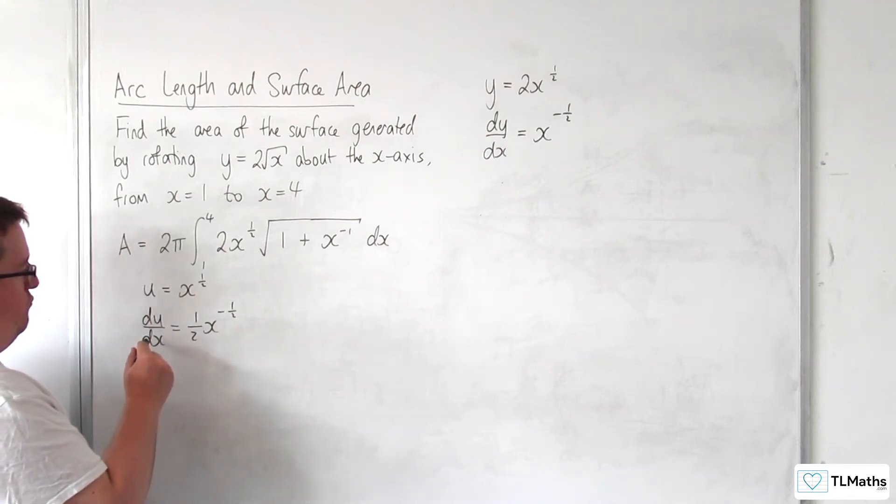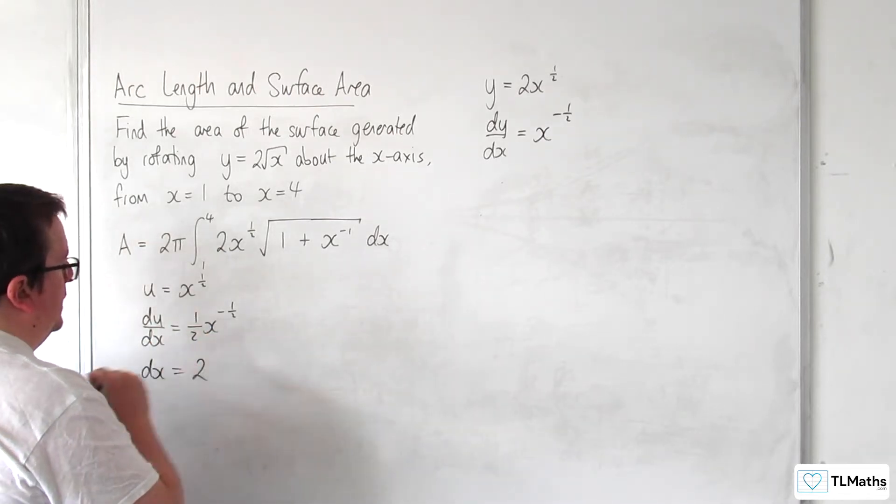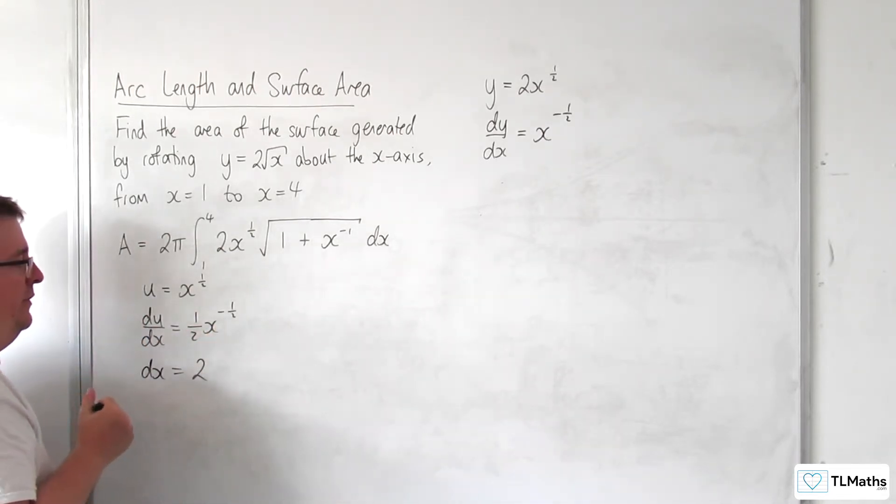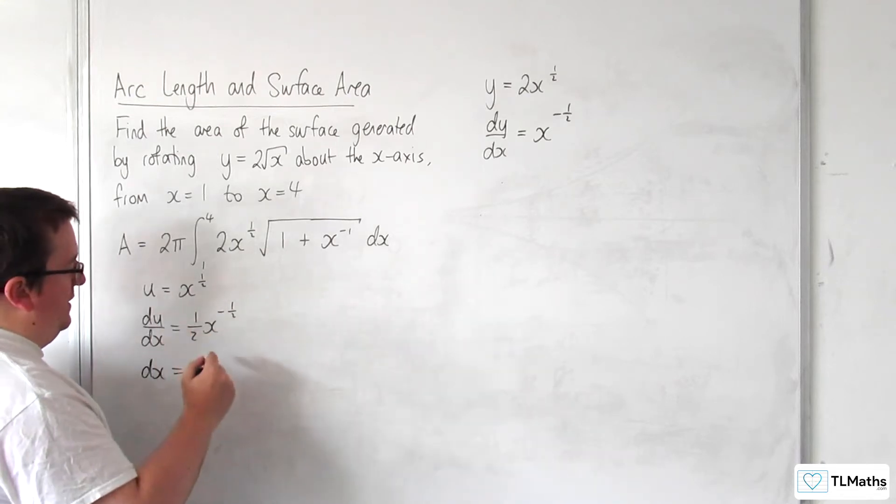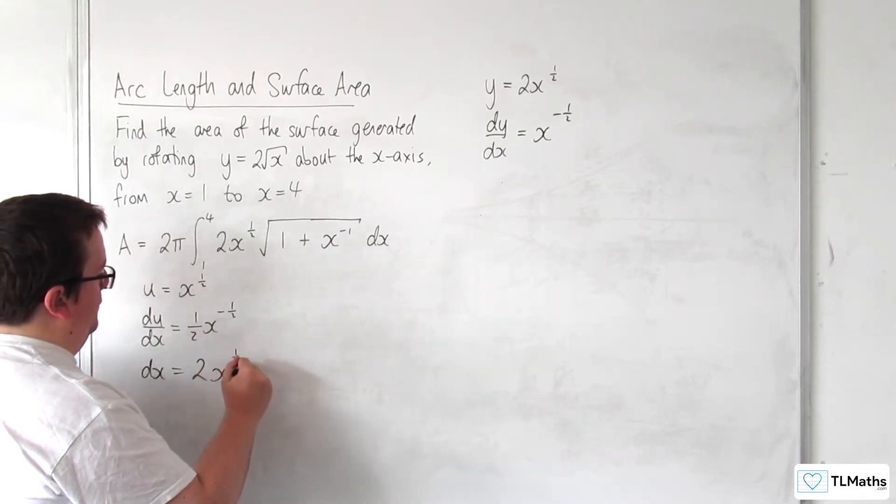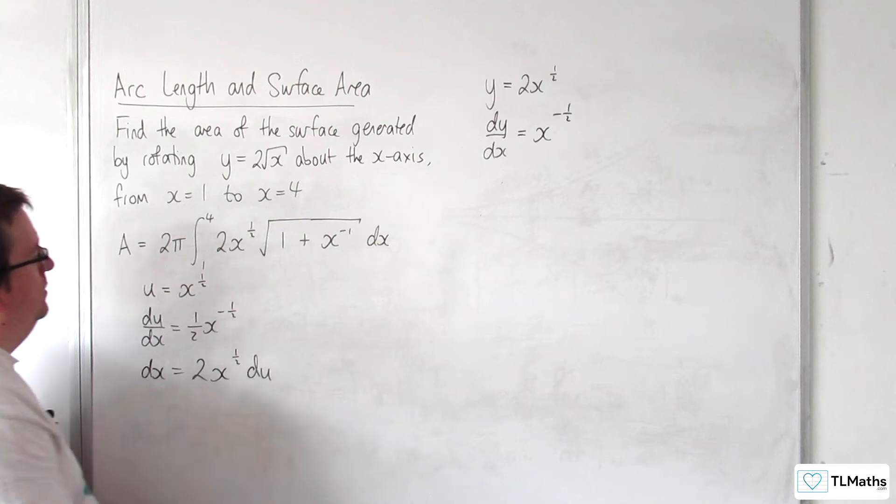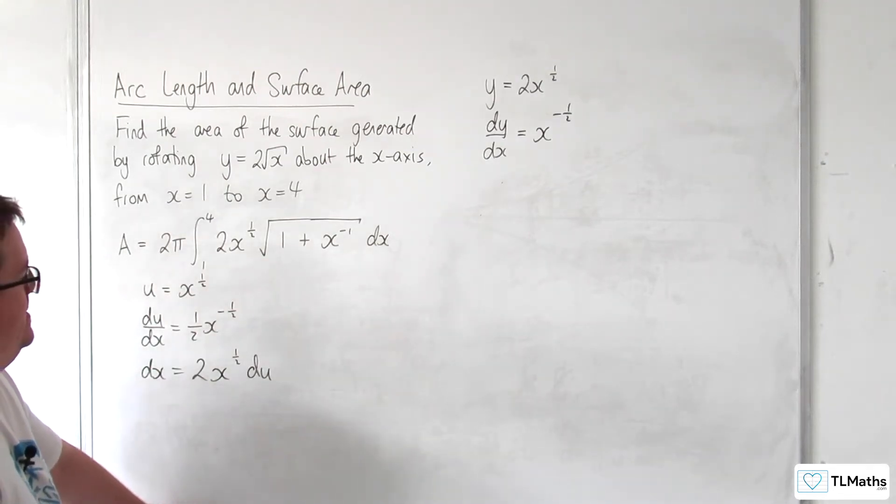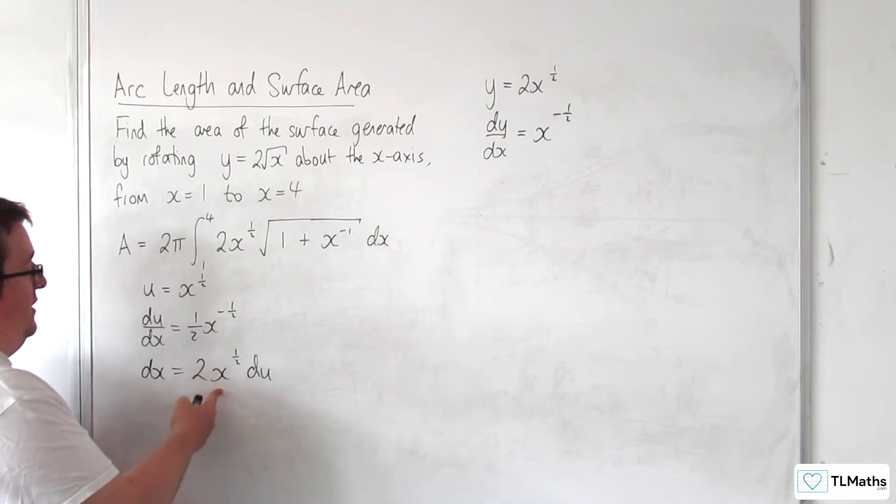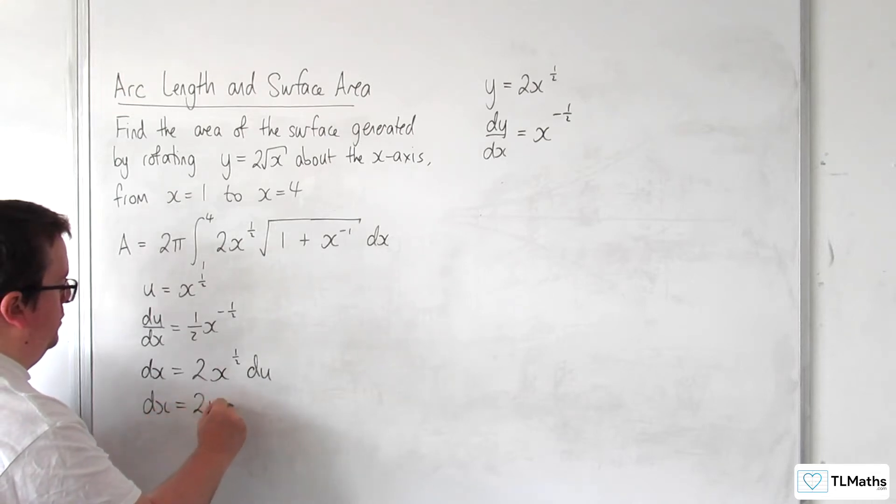Rearranging this, we need to get this as dx equals, so I'm going to multiply both sides by 2, multiply up by x to the half, so 2x to the half du. And don't forget, x to the half I've got as u, so dx is actually equal to 2u du.